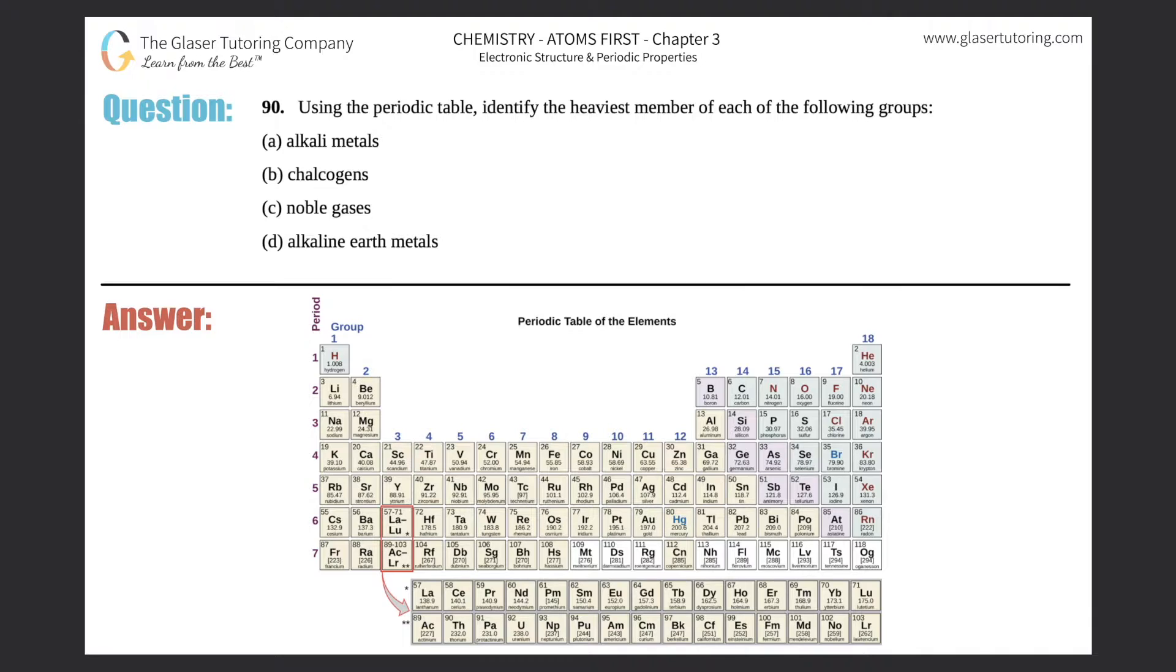Problem 90: Using the periodic table, identify the heaviest member of each of the following groups. They give me four different groups, so I'll write them as A, B, C, and D. We did a very similar problem in number 89, so if you want more practice go back to that one. This will be the quick version.